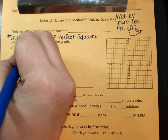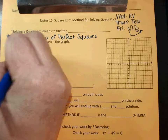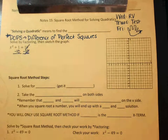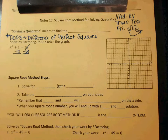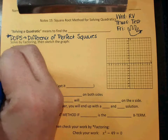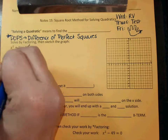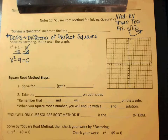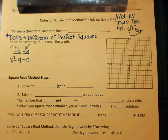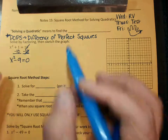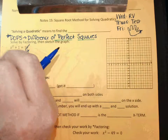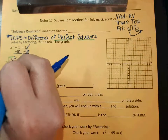Both sides, minus 10 here, minus 10 here. And then what is 1 minus 10? X squared minus 9 equals 0. And then the reason you would do difference of perfect squares is that both of these are perfect squares.